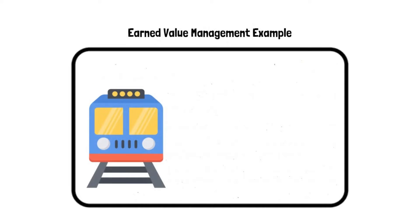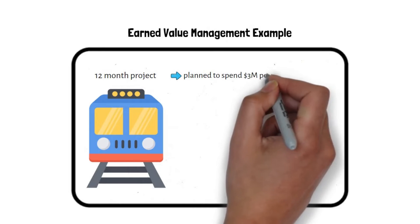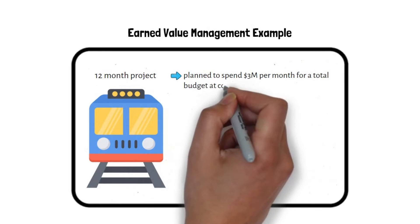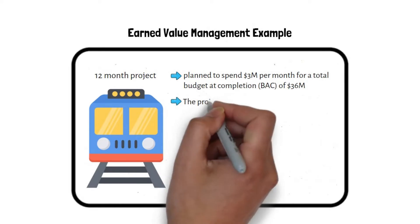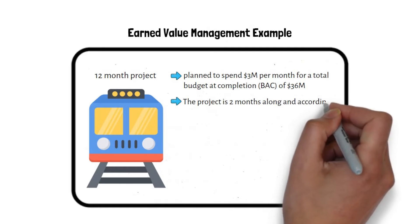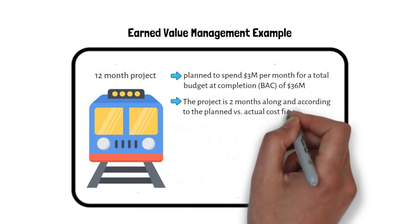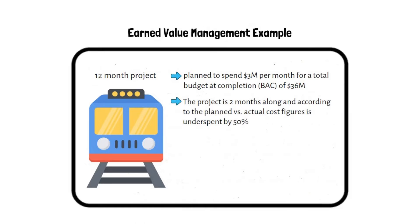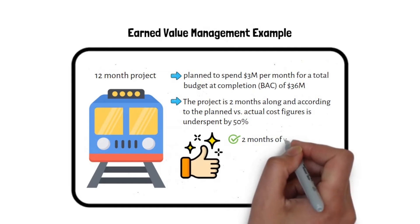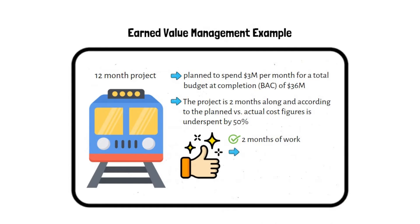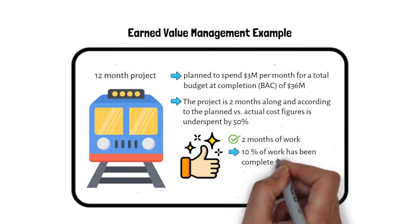Earned Value Management example: assume a 12-month railway project planned to spend 3 million dollars per month, for a total Budget at Completion of 36 million dollars. The project is two months along and, according to planned versus actual cost figures, is underspent by 50%. We might assume the project is going well because it's costing less than planned.